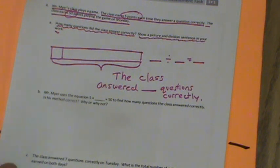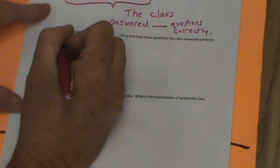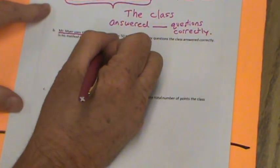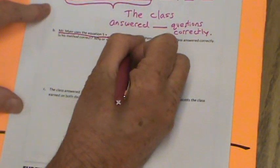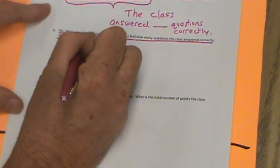All right, now let's go to B. Pause this if you need to look at it. Number B, before B. Mrs. Meyer's uses the equation five times blank equals 50 to find how many questions the class answered correctly. Is his method correct? Why or why not? So we're going to do, once again, a little bit of writing. And you're going to have to fill in the blanks with something from the word box.